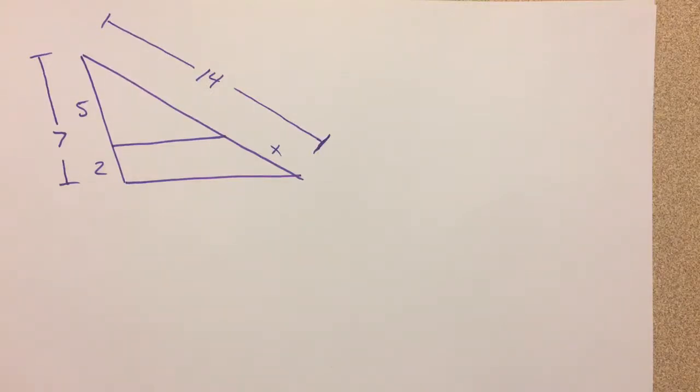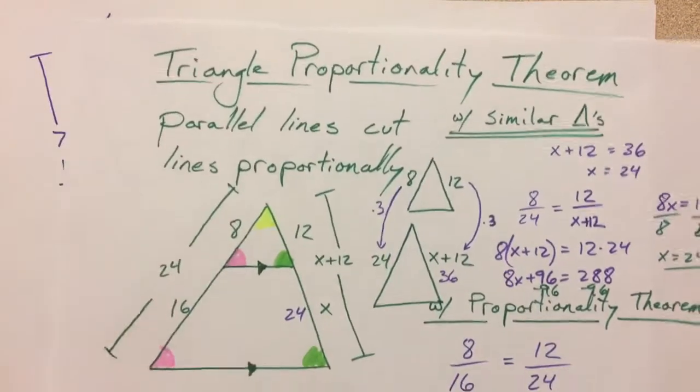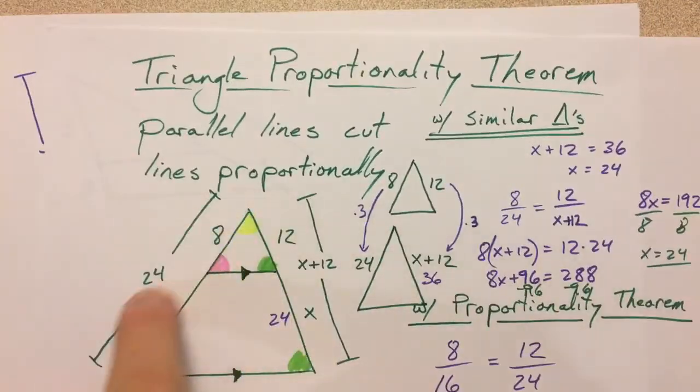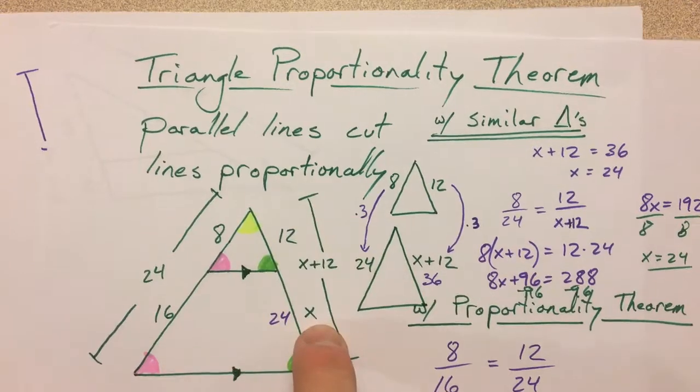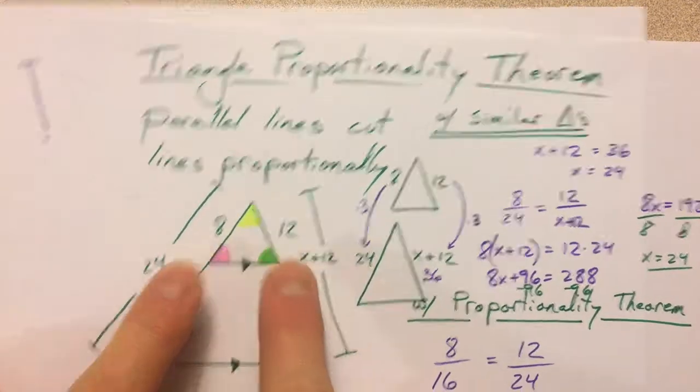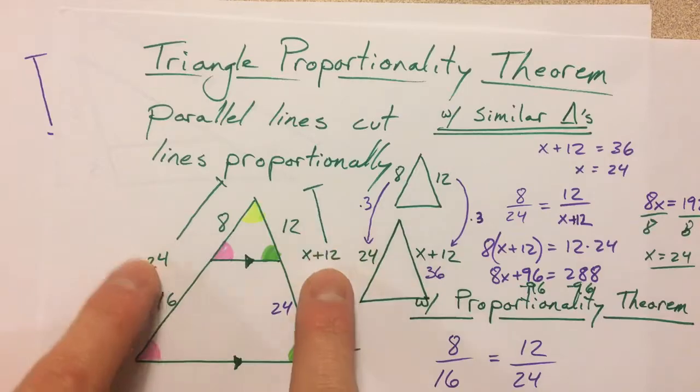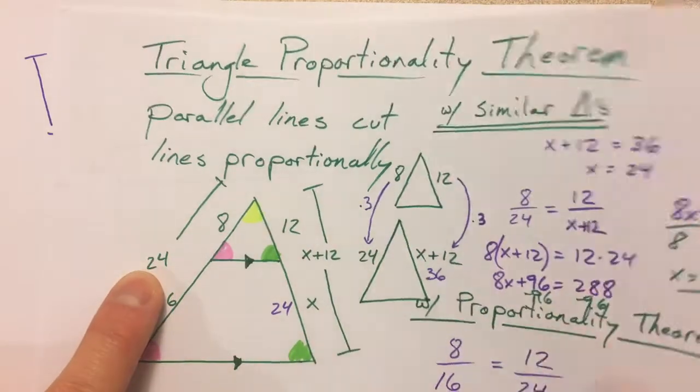We're talking about the triangle proportionality theorem, and we just got done talking about how you can compare the pieces to each other. Compare the smaller parts up here, compare these two parts side by side, you can compare these two parts side by side.